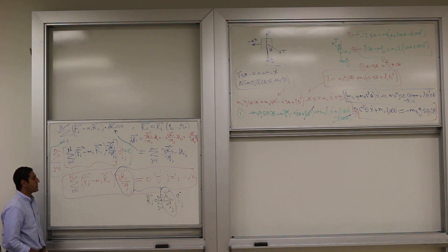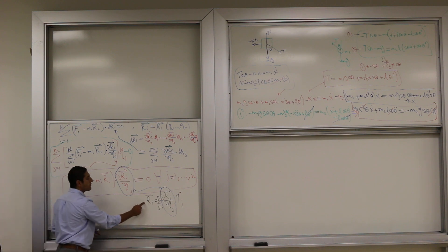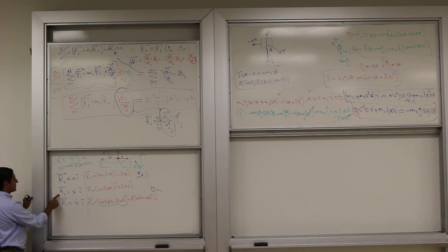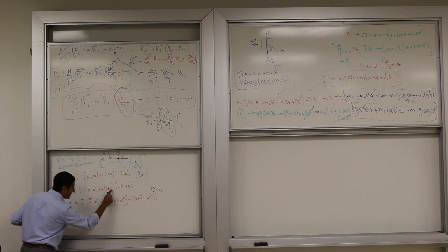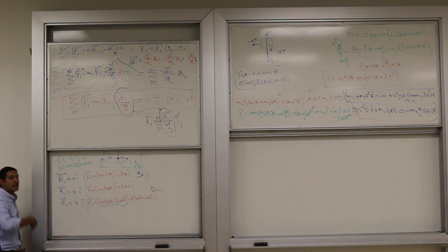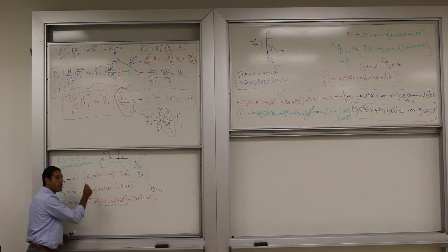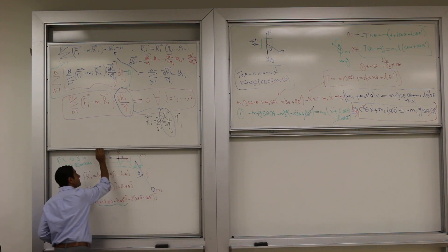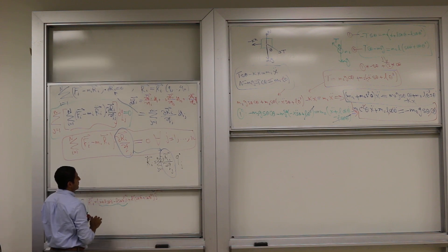We call this actually velocity coefficient. So your velocity is always linear in the dot thing, in the q dots. This is your velocity is linear in x dot. It's always like this. And this something, the coefficient, is that coefficient that we're doing. This is what we call velocity coefficient.